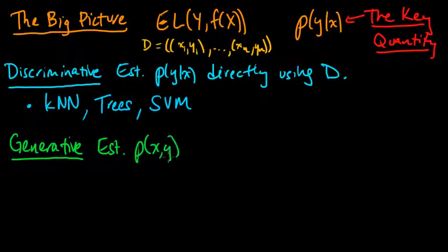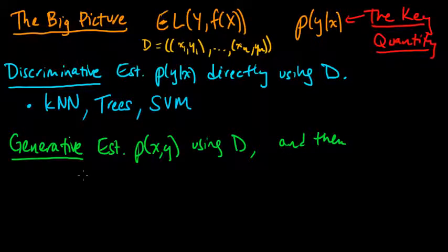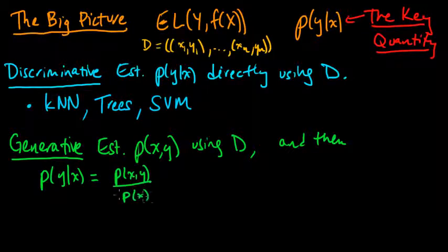So generative approach says, model the joint distribution using your data. This conditional distribution can be advantageous from a statistical perspective because it's much easier to estimate. This is a much less complicated object than this joint distribution. So statistically speaking, discriminative methods have an advantage in that respect. But generative models usually have a richer sort of model. This says, estimate this using D. And then you can always recover the conditional distribution of Y given X by just using the definition of conditional probability.